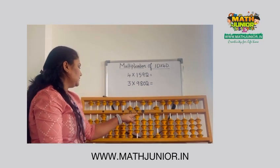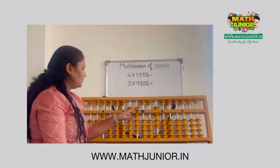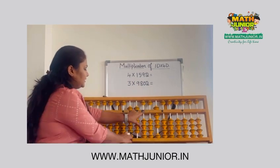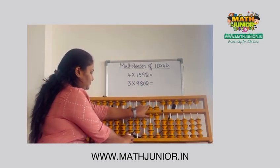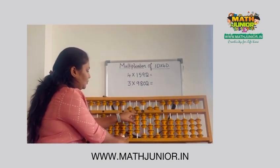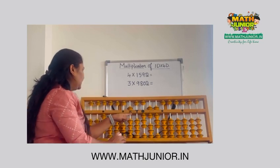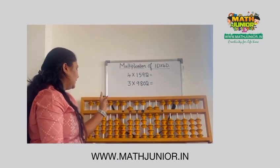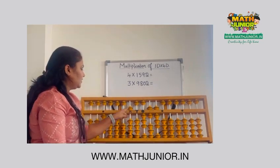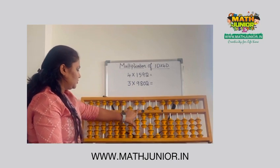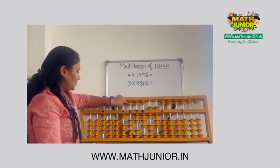Next is 9 times 4 is 36. After 9, place 36. Then remove 9. Next is 5 times 4 is 20. After 5, place 20. Then remove 5.